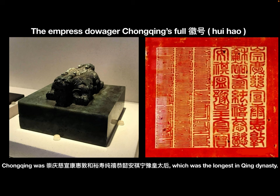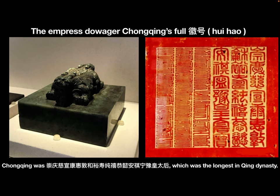So the full Hui Hao of the Empress Daozhe Chongqing was: Chongqing, Cixuan, Kang Hui, Dun He, Yu Shou, Chun Xi, Gong Yi, An Qi, Ning Yu, Huang Tai Hou — which was the longest Hui Hao in Qing Dynasty.